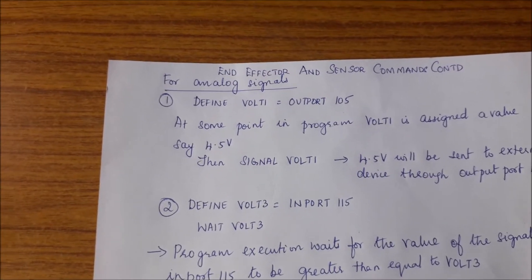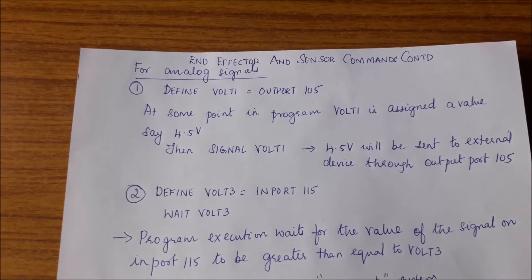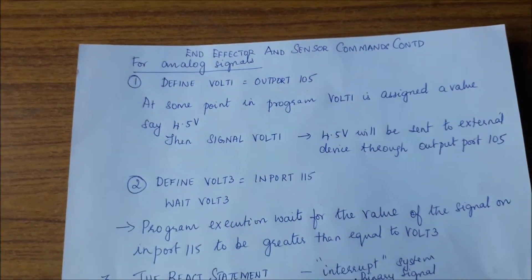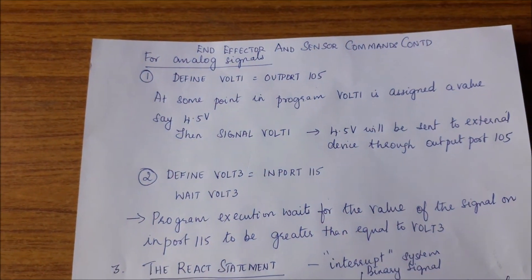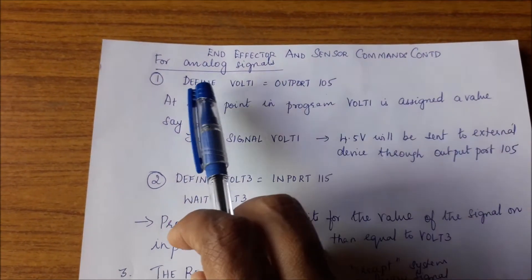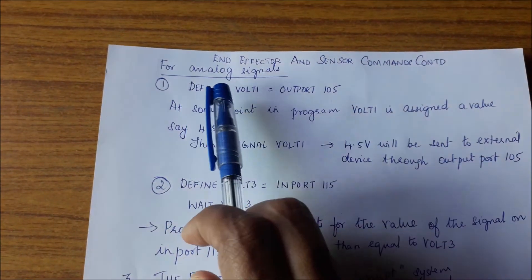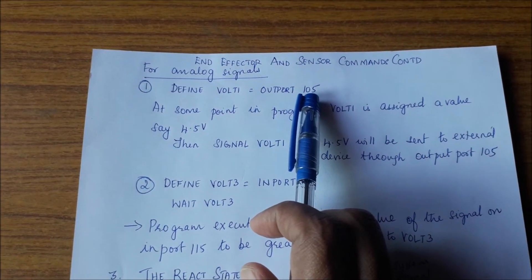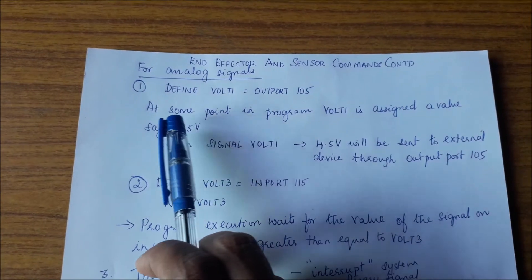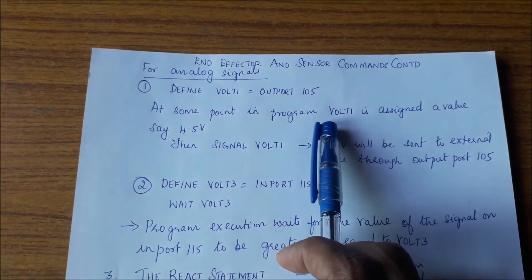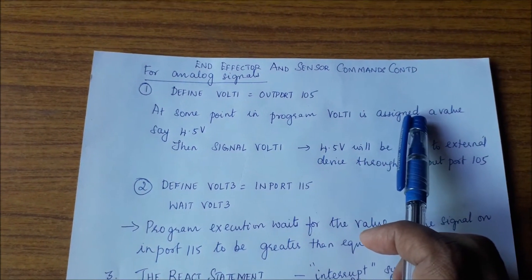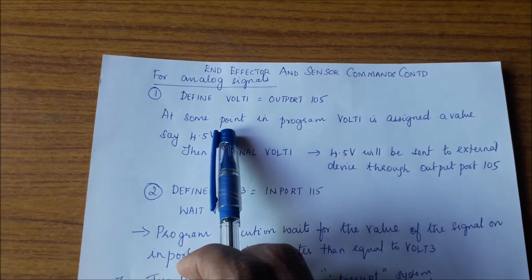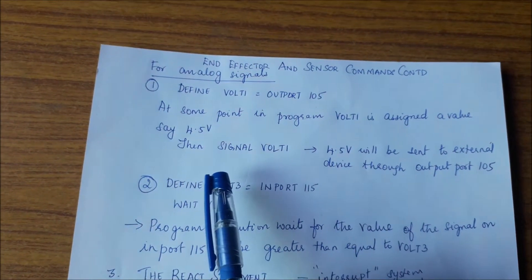Continuing with our discussion on ND factor and sensor commands. Now suppose instead of binary signals on and off, we had analog signals. In this case, consider: define volt1 is equal to output port 105. What this means is, at some point in the program, volt1 will be assigned some value through computation — let us say 4.5 volts.